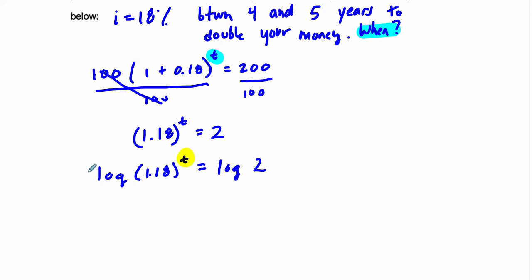t times the log of 1.18 equals the log of 2. So what this ends up equaling, t equals the log of 2 over the log of 1.18.